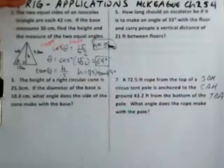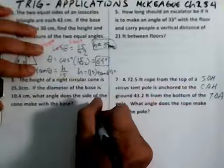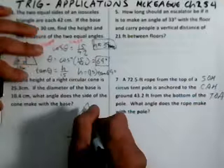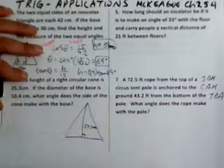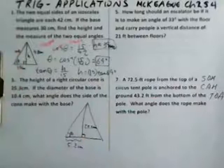Next problem: the height of a right circular cone is 25.3 centimeters. If the diameter of the base is 10.4 centimeters, what angle does the side of the cone make with the base? Drawing a cross-section of the cone: the height is 25.3 centimeters, the diameter is 10.4, so the radius — half the base — is 5.2 centimeters. I'm looking for angle theta right there.